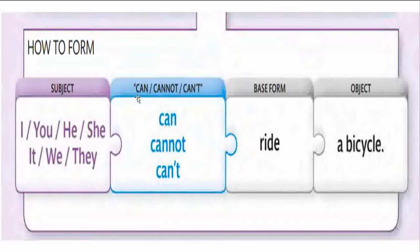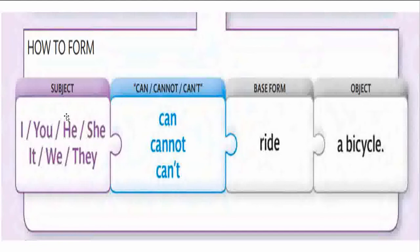Now let us see the structure of how these sentences are formed. You have the subject, then the modal 'can,' 'cannot,' or 'can't,' then the base form of the verb, and then the object or remaining part of the sentence. The subject can be first person 'I' and 'we,' second person 'you,' third person 'he,' 'she,' 'it,' and 'they,' or a proper noun like John, Mary, etc.